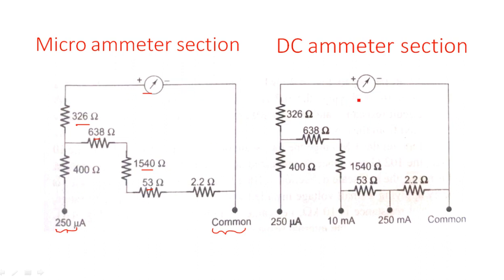Coming to the DC ammeter section: the different ammeter ranges include 150 milli amperes with the common section. If you want to keep the micro ampere range you can, otherwise you can avoid it. The 400-ohm section can be kept or eliminated. The heading is DC ammeter section — if it is a milli ammeter, you can avoid the 400 ohms and the 250 micro amperes. If you add those, it becomes the full ammeter section.